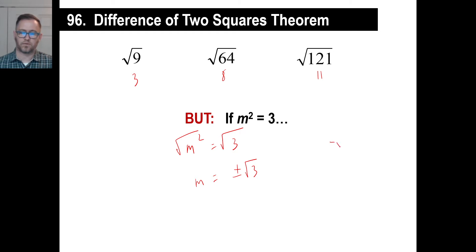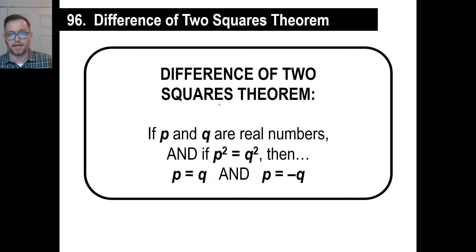Because, if you take the square root, a negative of the square root of three, and you square it, which means you're going to multiply it by itself, a negative times a negative is a positive, and a square root of three times a square root of three is a square root of nine, which is just three. So you have two answers when you have an equation that looks like this. So this is kind of the theorem, if you want to write it down.